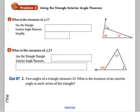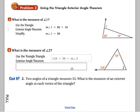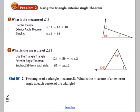So what's the measure of angle 1? Well, from our triangle exterior angle theorem, we know angle 1 is equal to the sum of those two opposite angles, which is 80 and 18, which gives us 98. Again, we can use the triangle exterior angle theorem for the measure of angle 2. So 124 will equal the sum of the other two opposite ones. And we can solve that for angle 2 by subtracting 59, and that gives us 65 degrees.